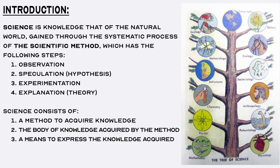Introduction. First, let us define science. Science is knowledge that describes and explains the natural world, gained through the process of observation, speculation, and experimentation. The steps in the systematic process of observation, speculation or hypothesis, experimentation, and explanation or theory are today called the scientific method.